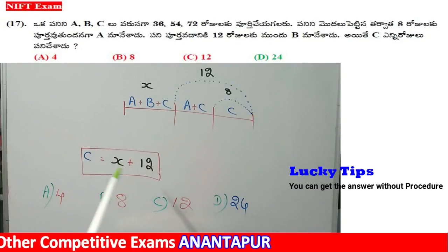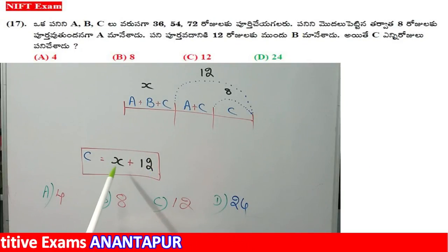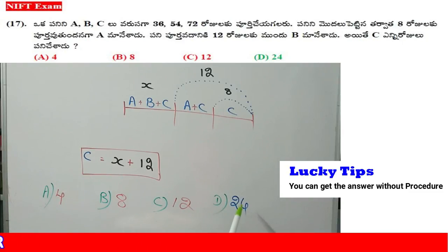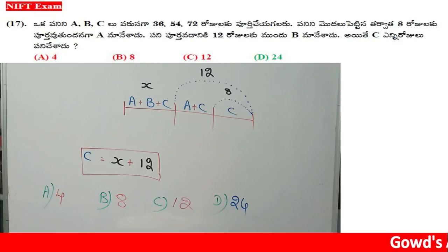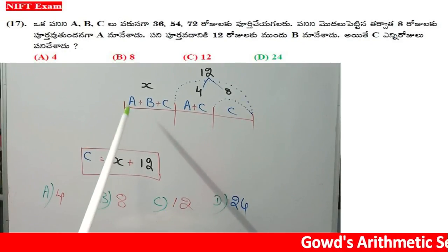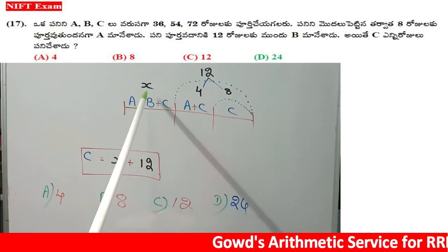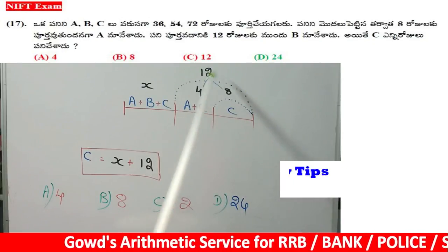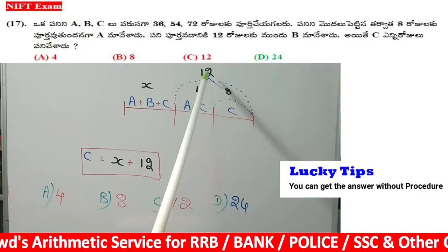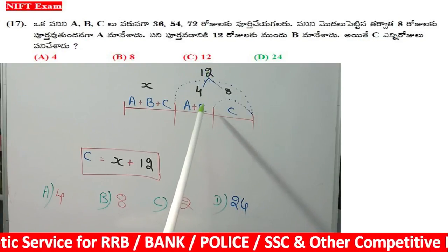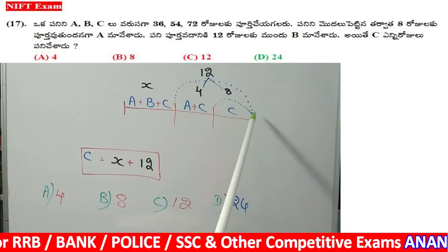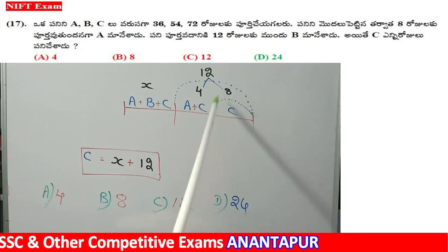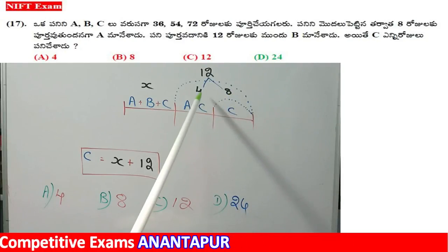The definite cost is X plus 12. 12 is equal to 12. We can see there is one option in the options. Okay, so you have clarity. Let's get started.